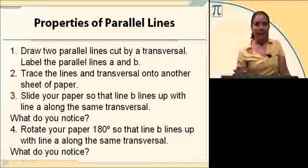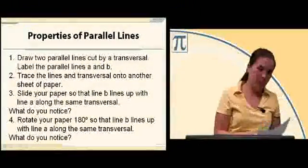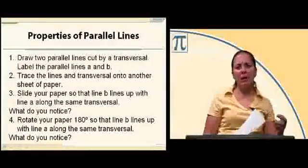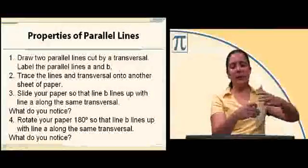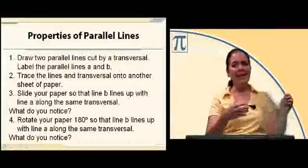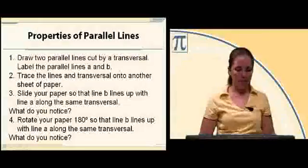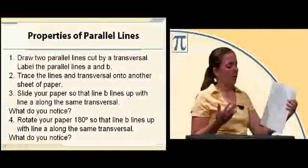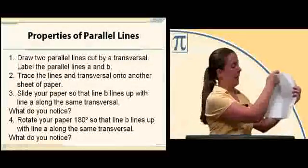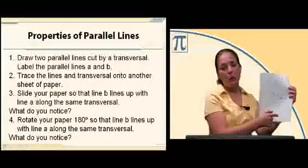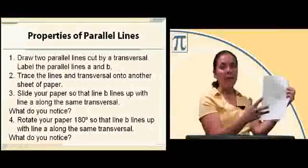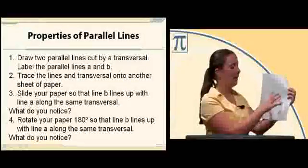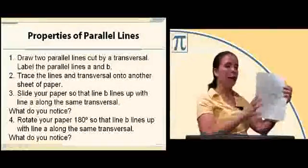Let's do an activity to show how all these angles are related. All you need is a piece of paper and a piece of tracing paper or a transparency — a pocket sleeve works. Make parallel lines by placing a ruler on your paper and drawing a line on both sides of the ruler, then cut it with a transversal and label all eight of your angles one through eight.